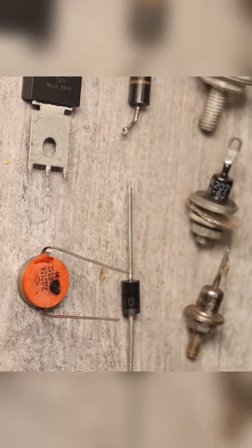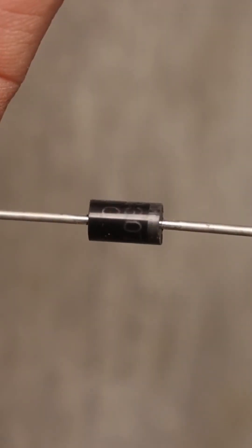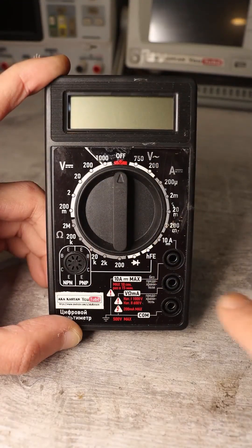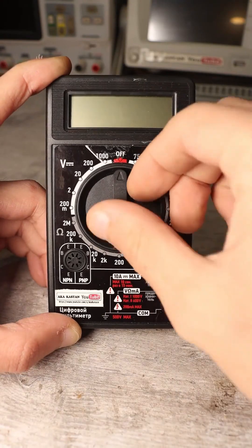How to test a diode with a multimeter? Regular diodes can be easily tested with any multimeter. To do this, first set the device's switch to the specified mode.